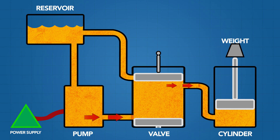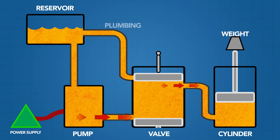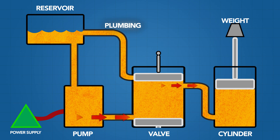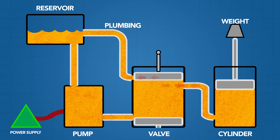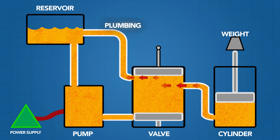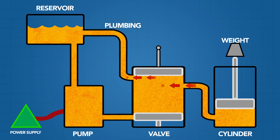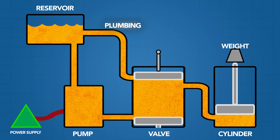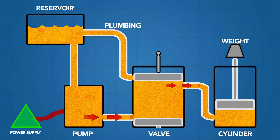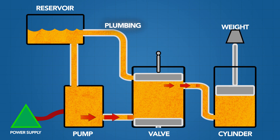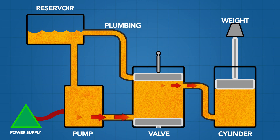And lastly, most importantly, is the plumbing. This is the system that Gregg Distributors gets most involved in. These are the components that are used to join the reservoir, pump, control valve and cylinder all together so the hydraulic system operates properly.